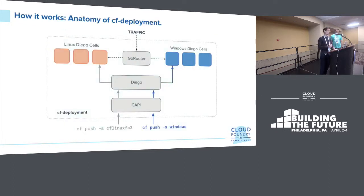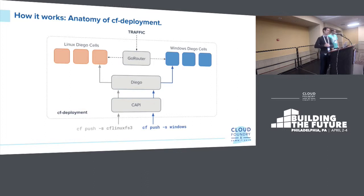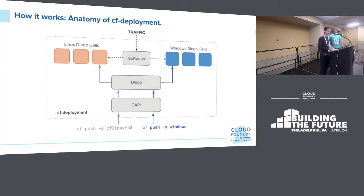If you're not familiar with CF deployment and how it treats Windows, it's pretty simple. You add an ops file and deploy Windows Diego cells right alongside the Linux Diego cells. When you CF push, you just say -s windows, and Diego schedules that to the Windows cells. There's a ton of common infrastructure between the Linux side and the Windows side — we're just building the smallest amount it takes to enable Cloud Foundry to push that application and run it in a container on a Diego cell.